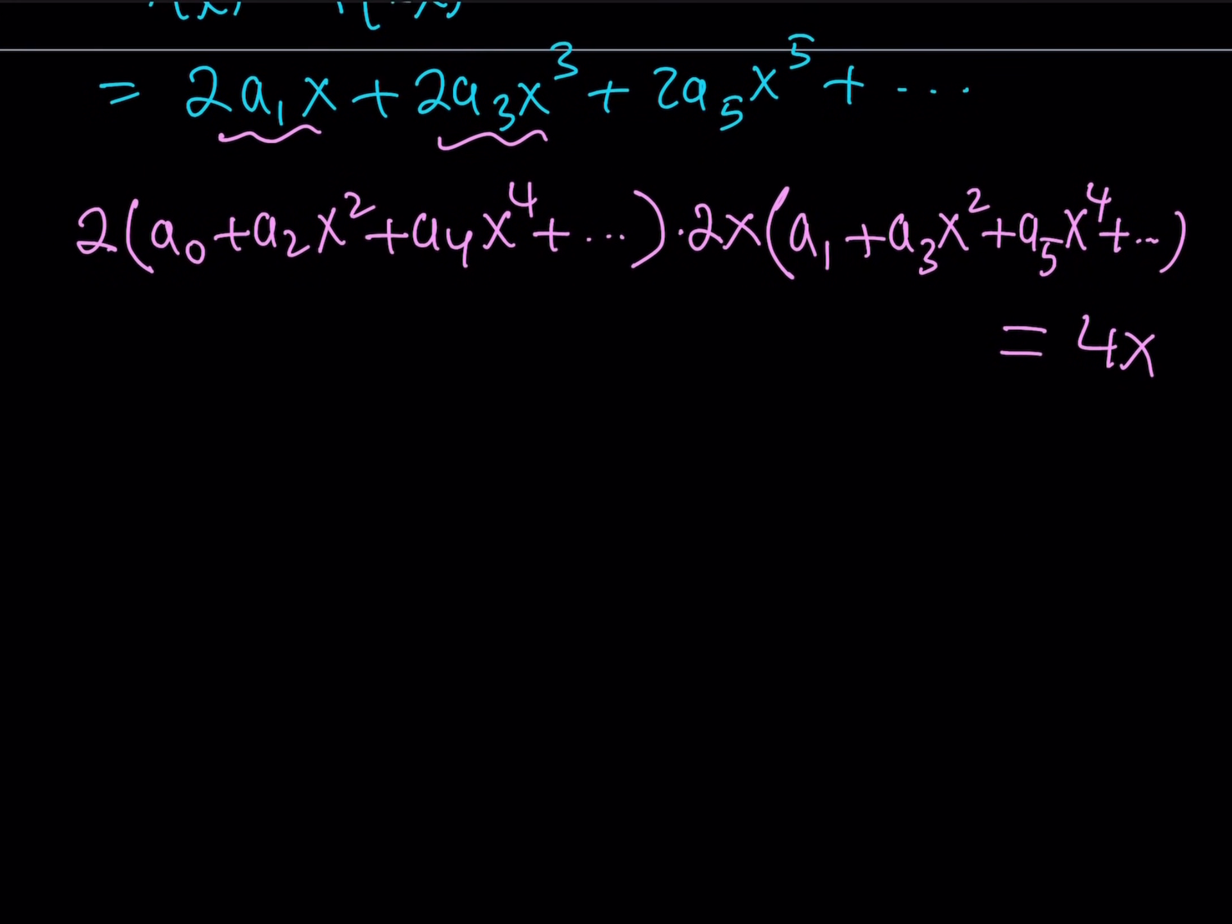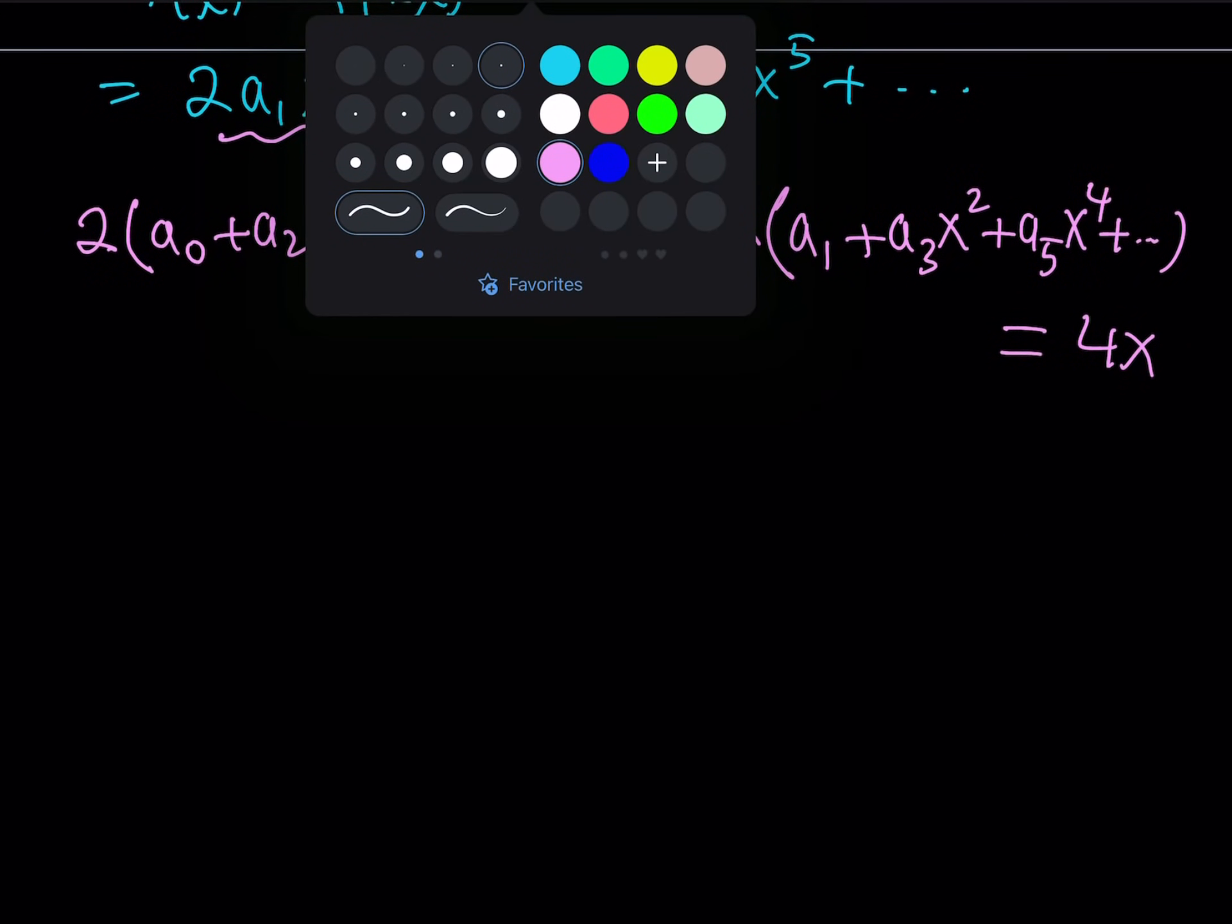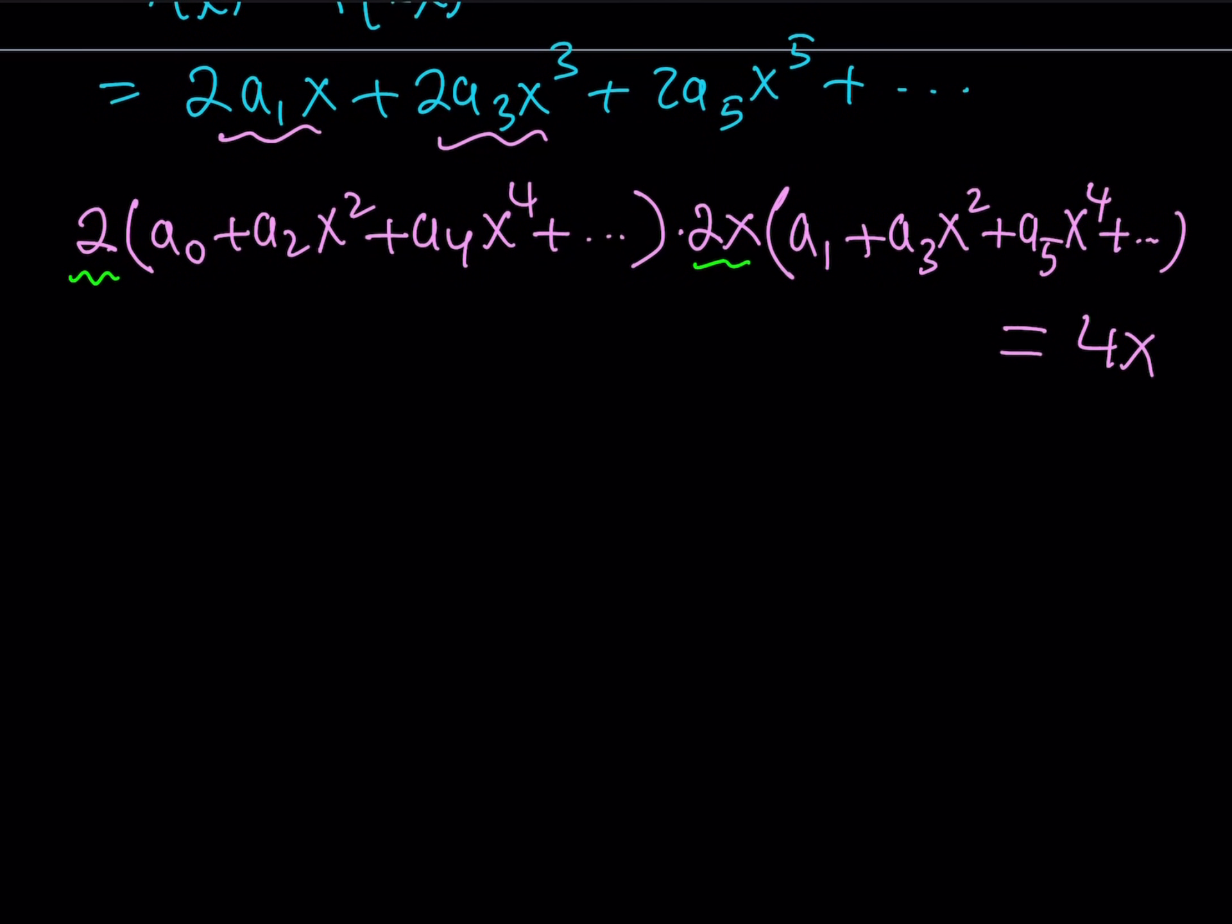Notice that if you multiply 2 times 2x, you get 4x, so we can cancel that out and end up with 1 on the right-hand side. This tells us we get a0 plus a2 x squared plus a4 x to the 4th, multiplied by a1 plus a3 x squared plus a5 x to the 4th equals 1.